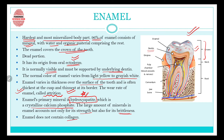Enamel does not contain collagen. To summarize: enamel is the hardest and most mineralized body part; its mineral is hydroxyapatite, which is crystalline calcium phosphate; it originates from the ectoderm layer; its color varies from light yellow to grayish white; and it is thickest at the cusp and thinnest at its border.